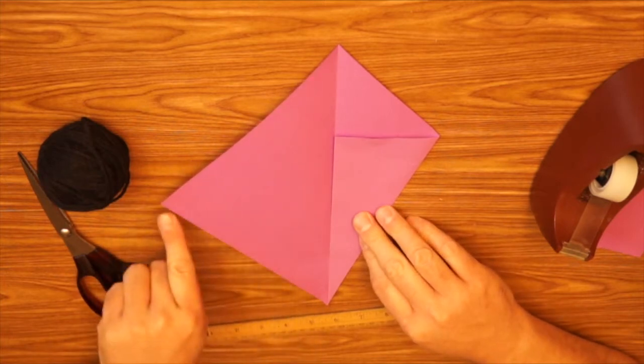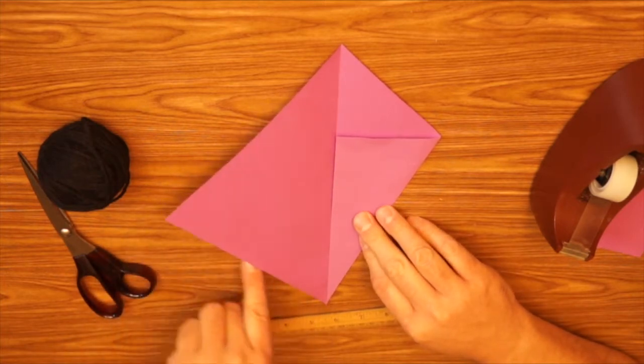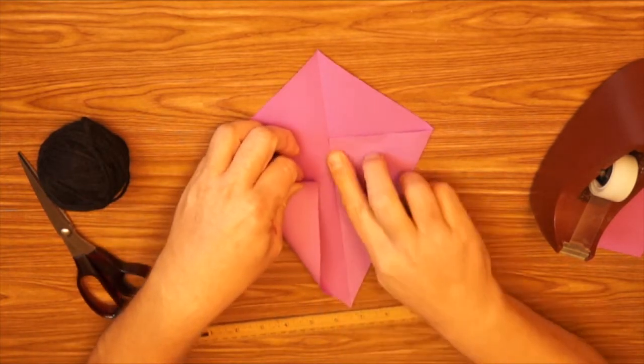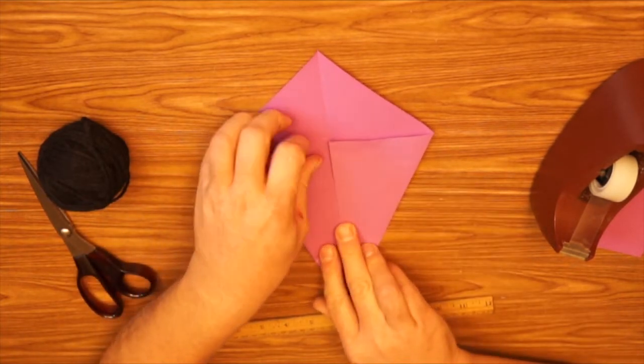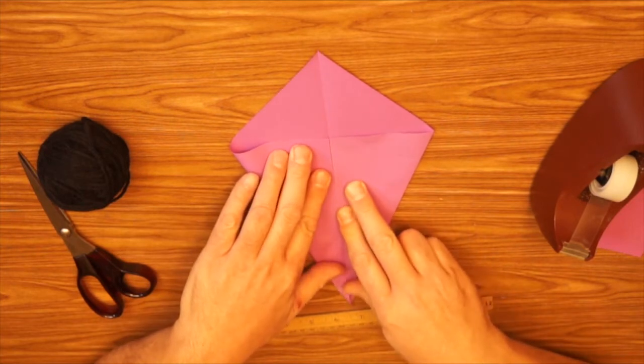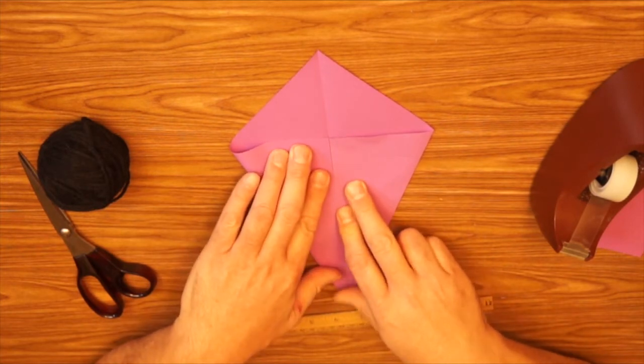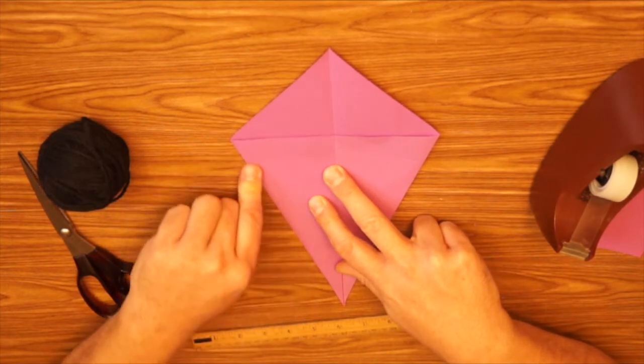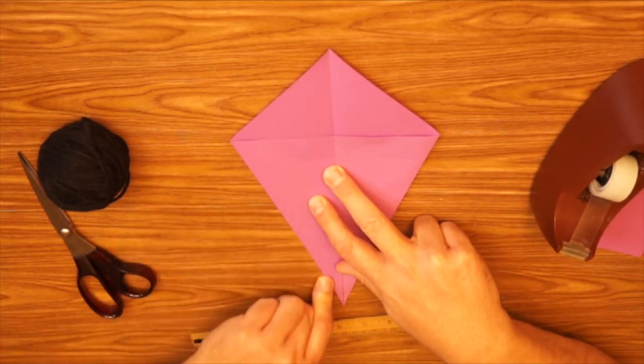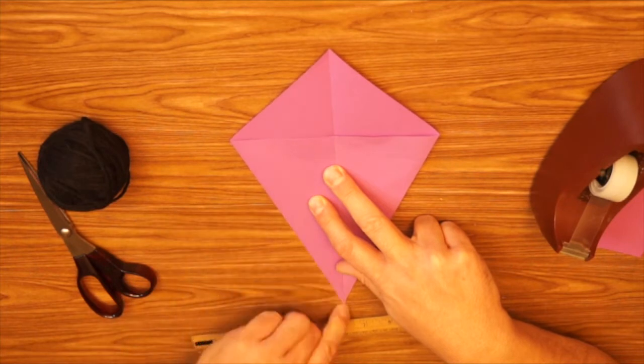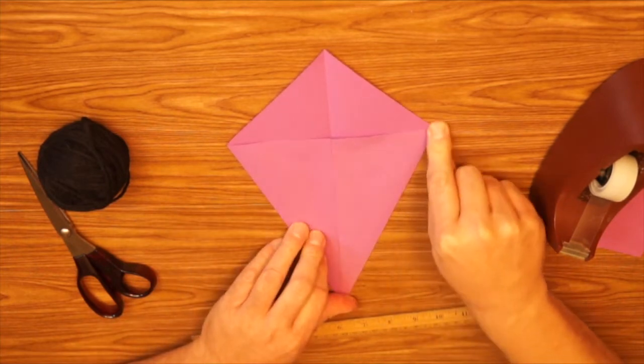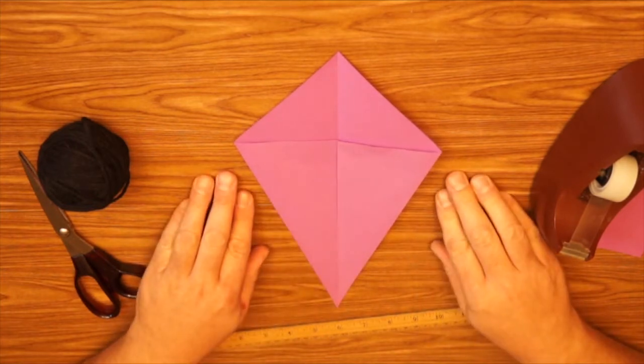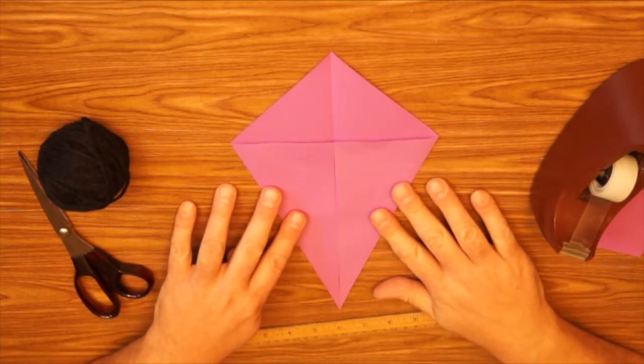And then we fold the other side, the bottom left, over to meet in the middle, meet the right side in the middle. If you line it up right next to it, you want them to touch but not to overlap. And so line that up and then press down good on your folds. Okay, so this is our basic kite shape.